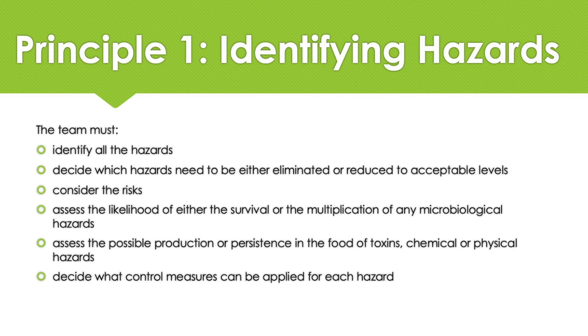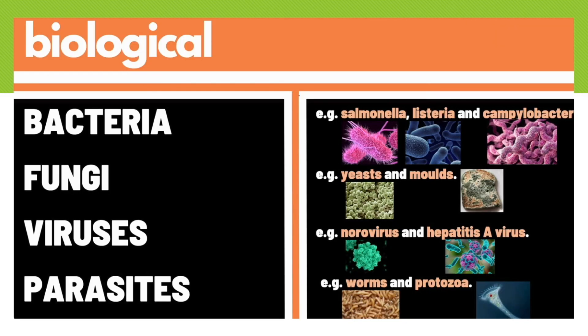All hazards are assessed and categorized into four groups: biological, physical, chemical, and allergenic hazards. The general definition of a hazard related to food safety is conditions or contaminants that can cause illness or injury.